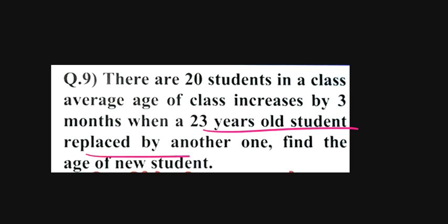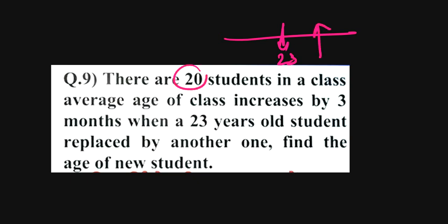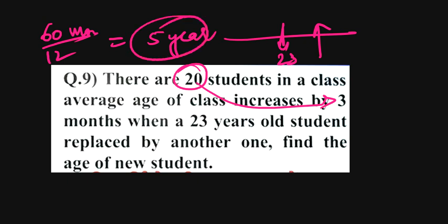When a 23-year-old student is replaced by another one, so our 23-year-old student is going and who will come? The average increases by 3, so 3 months means 20 multiplied by 3 equals 60 months. So we'll do this in years, so 5 years. So 5 years will increase, so 23 plus 5 is 28 years.